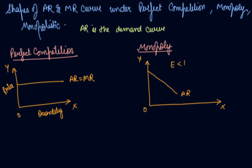So your MR curve - we have seen the property of AR and MR curve - that your MR curve is below AR. In your revenue chapter we have discussed the properties of AR and MR. So this is your AR and MR and elasticity is less than elastic.